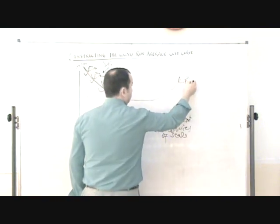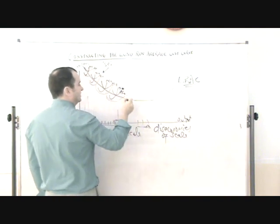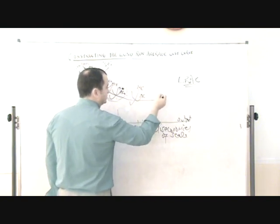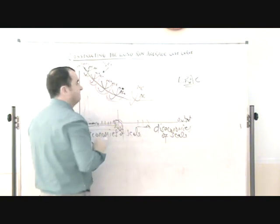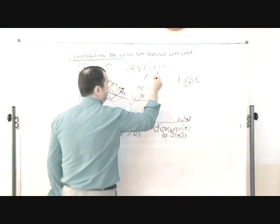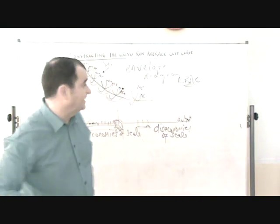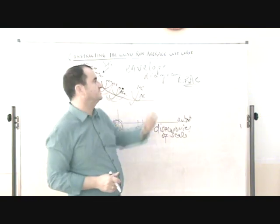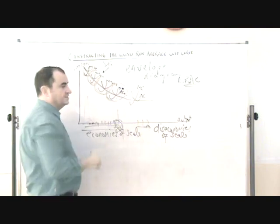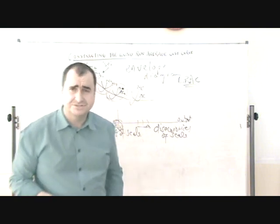This then is the long run average cost curve built up from short run cost curves. And I could have continued this showing you again and again. Sometimes this is called an envelope diagram. It's the long run average cost curve falling because of economies of scale, rising because of diseconomies of scale, and within each short run period we see diminishing returns occurring. So I hope that helps to explain the long run average cost curve.